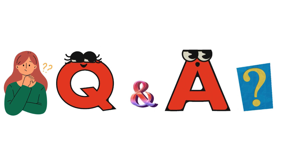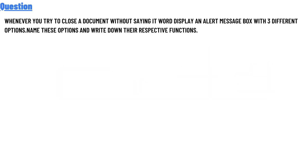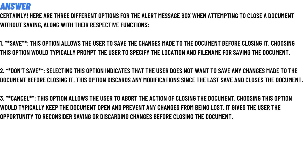Our today's question is: whenever you try to close a document without saving it, it will display an alert message box with three different options. Name the three options and write down their respective functions.